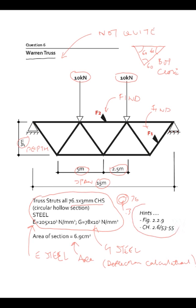It's given as 78 times 10 to the 3 Nm², the area is 6.9 cm², and the hints we are looking in the book in figure 2.2.9, and chapter 2.6, pages 53 to 55.